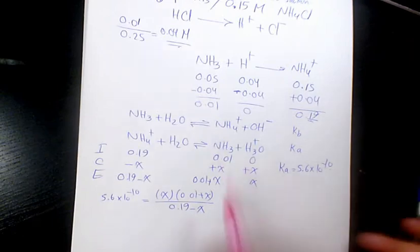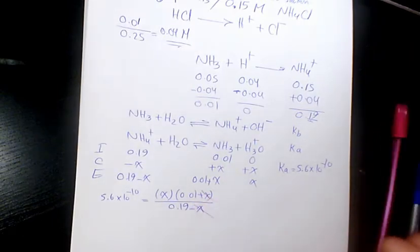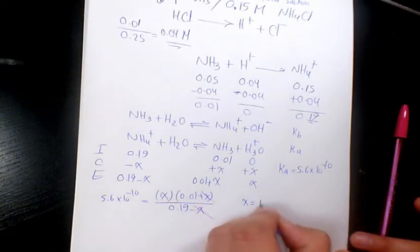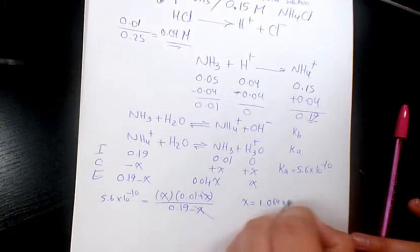When you neglect the x terms, x equals 5.6 times 10 to the -10 times 0.19 divided by 0.01, which equals 1.064 times 10 to the -8.